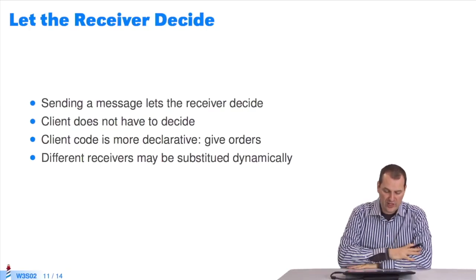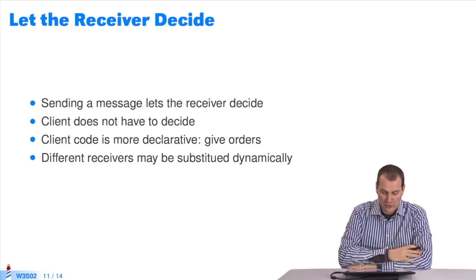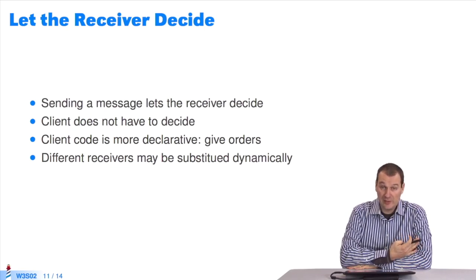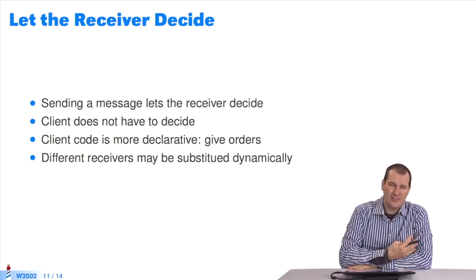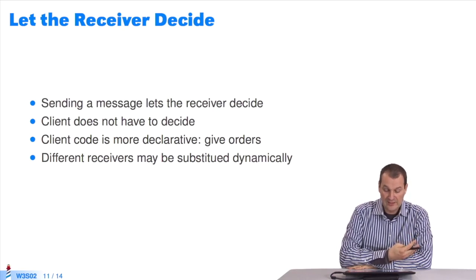What have we learned? We've learned that sending a message lets the receiver decide and choose. Client does not have to decide. Client code is more declarative. There are no conditions. I give orders. Do this. Do that. Open. Close. Not. Do you belong to this class? Are you ready to be closed?